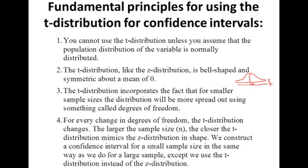The t-distribution incorporates the fact that for smaller sample sizes, the distribution will be more spread out, using something called degrees of freedom. For small sample size, the t-distribution is bell-shaped and symmetric, but it will be flatter compared to z-distribution. Its tails will be longer, whereas z-distribution is a peaked distribution. Both are normal, both are symmetric. For every change in degree of freedom, the t-distribution changes.